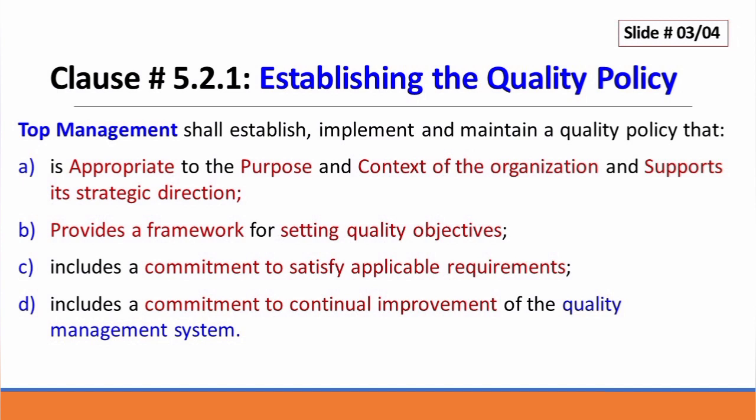Point D includes a commitment to the continual improvement of the quality management system. By reading all the requirements of this clause, it basically provides a content roadmap or structure to establish the QMS policy — presenting your purpose and context of the organization, supporting strategic direction, providing a framework for setting quality objectives, and showing commitment to meet applicable legal and other requirements, as well as commitment towards continual improvement.